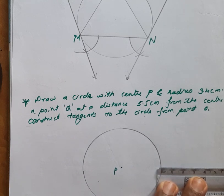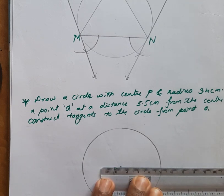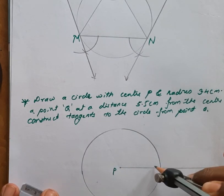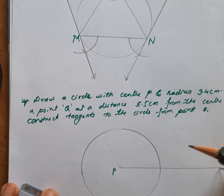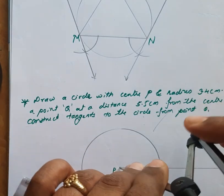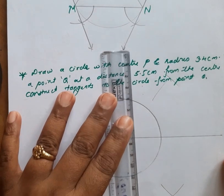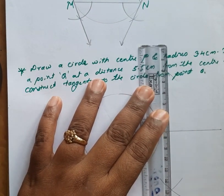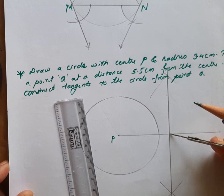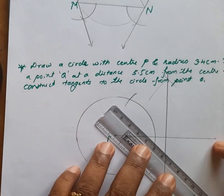From point P, draw a line of 5.5 centimeters. Now, taking more than half, draw two arcs from this point, and cut the two arcs from the other point as well. Now draw this line, which is the perpendicular bisector. From this midpoint, measure and make two arcs.